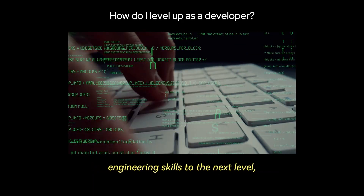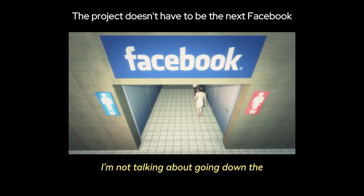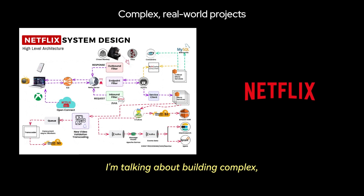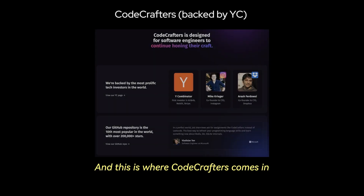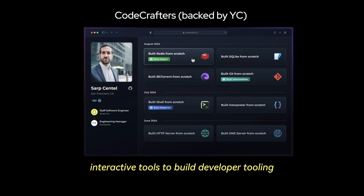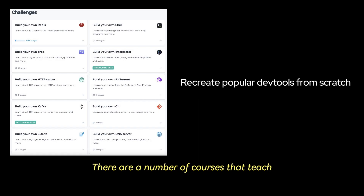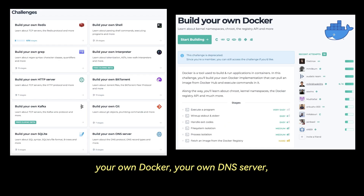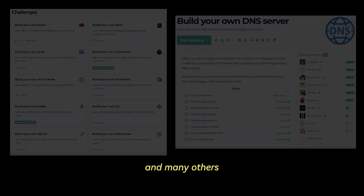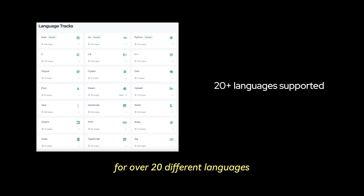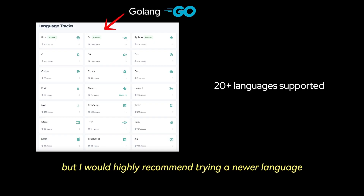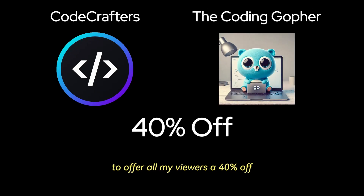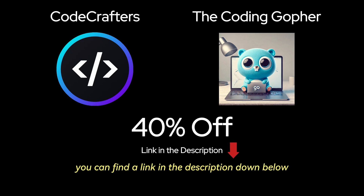If you're interested in taking your software engineering skills to the next level, I'd encourage you to build complex, real-world projects beyond tutorial hell basics like to-do lists or weather apps. This is where CodeCrafters comes in — a platform with interactive tools to build developer tooling from scratch, including Git, an in-memory Redis database, an HTTP web server, Docker, a DNS server, and many others. It supports over 20 languages including Golang and Zig. I'm partnering with CodeCrafters to offer all my viewers 40% off — find a link in the description and the pinned comment.